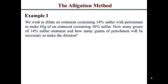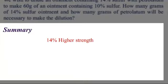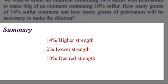In this first example, you wish to dilute an ointment containing 14% sulfur by diluting it with petrolatum. Petrolatum basically means there's no sulfur in it — it's 0%. You want to make 60 grams of an ointment which contains 10% sulfur. The question asks how many grams of the 14% sulfur ointment and how many grams of petrolatum you would need to make the dilution. Our higher strength is 14%, lower strength is 0% because petrolatum has no sulfur, desired strength is 10%, and desired quantity is 60 grams — all weight by weight.